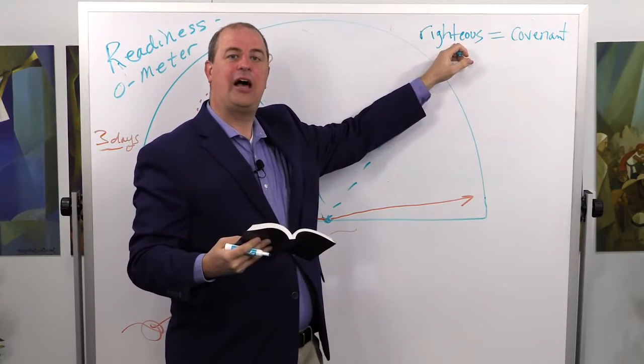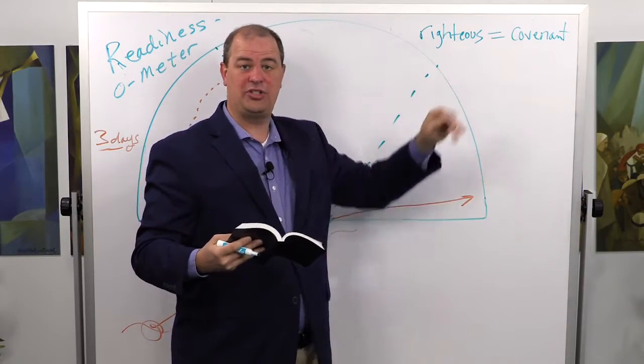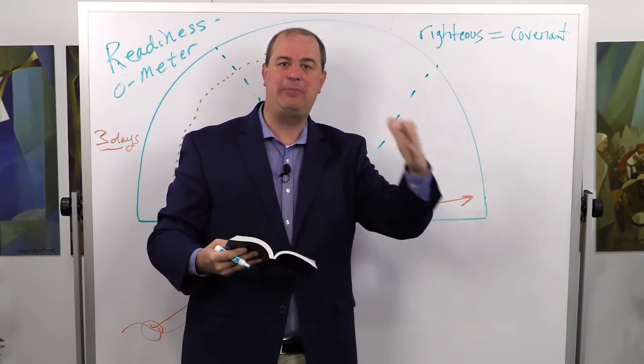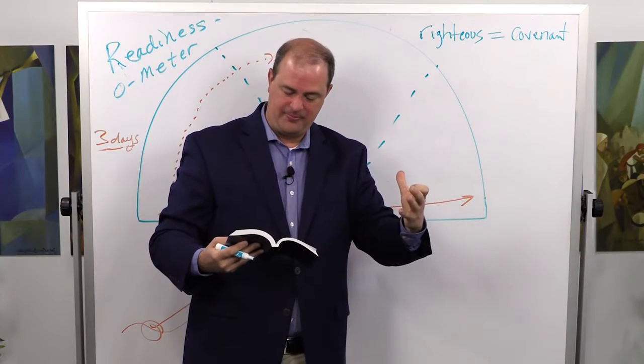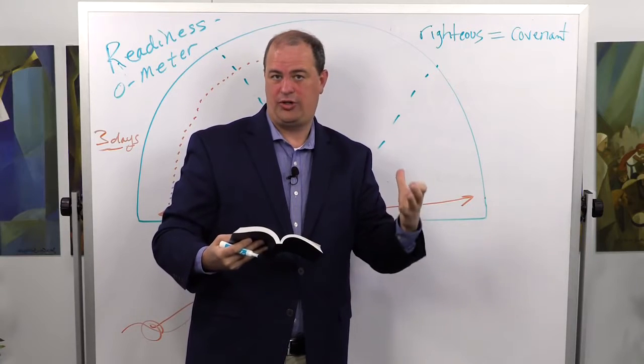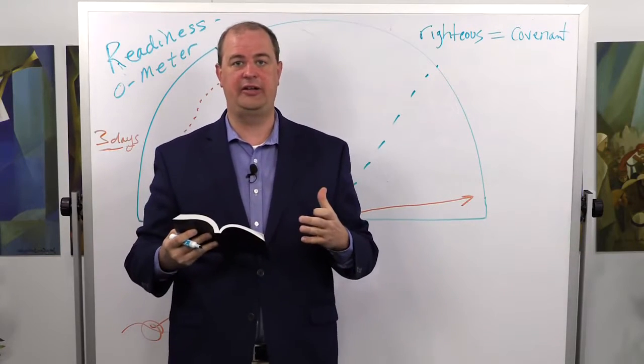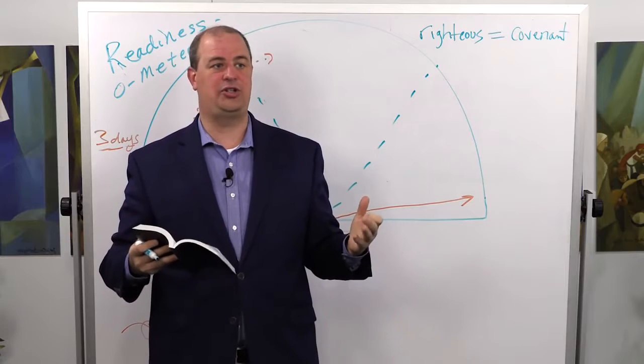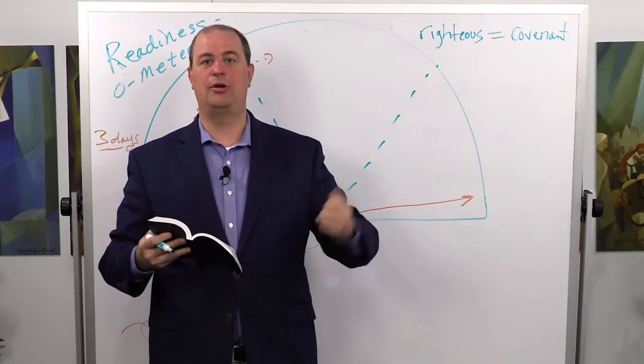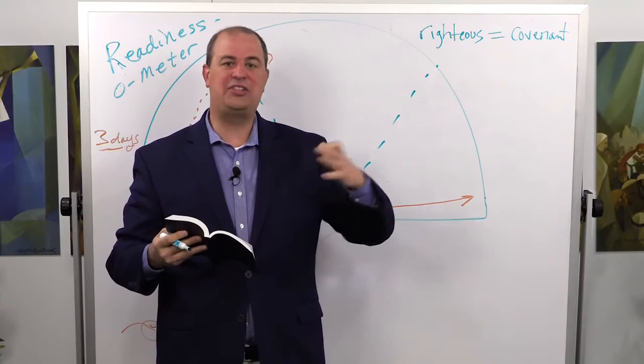And notice that what do they do to help them stay in the paths of righteousness or to stay on a covenant-keeping life path? They did establish a church among them. And if you think about our church organization today, the whole point of the church organization is not potluck dinners or roadshows or all these things that we do.